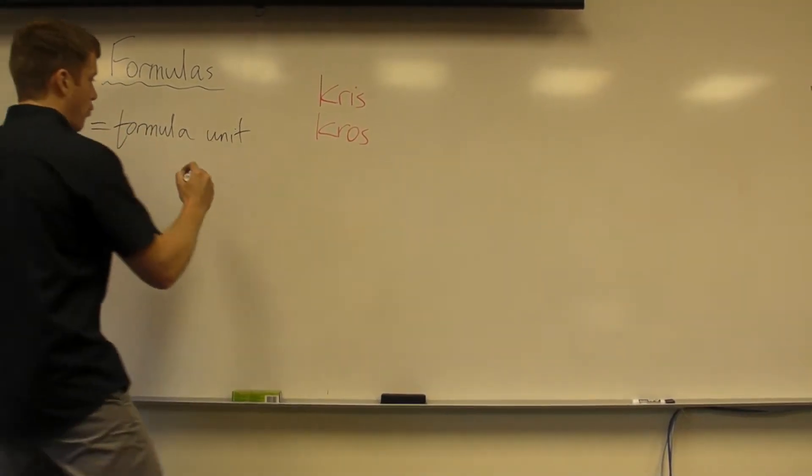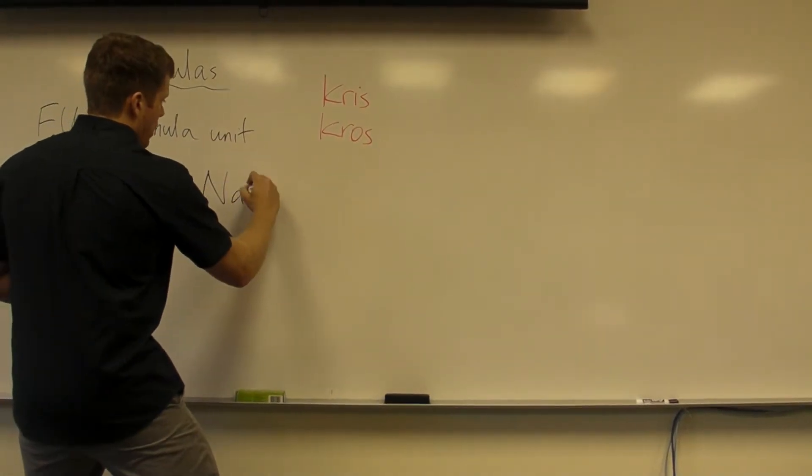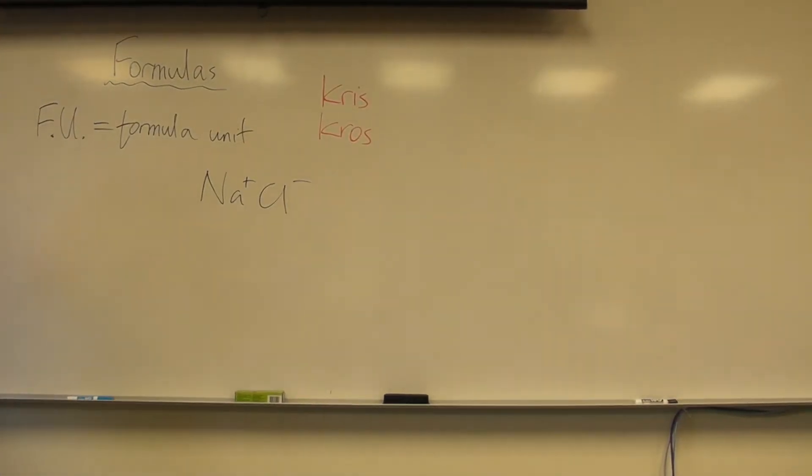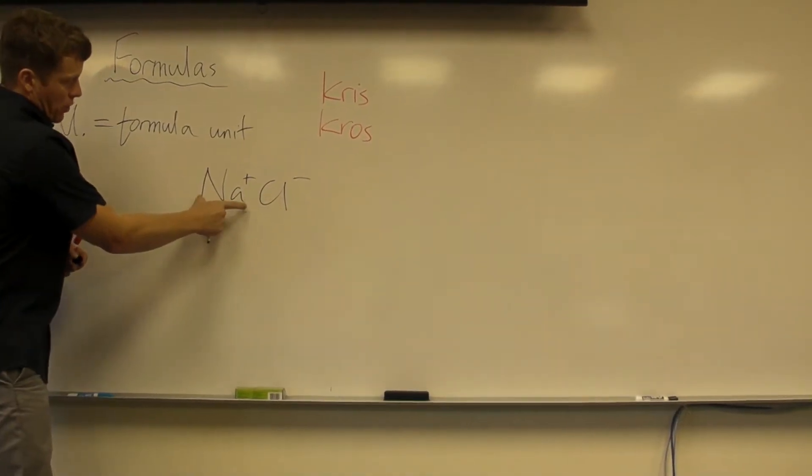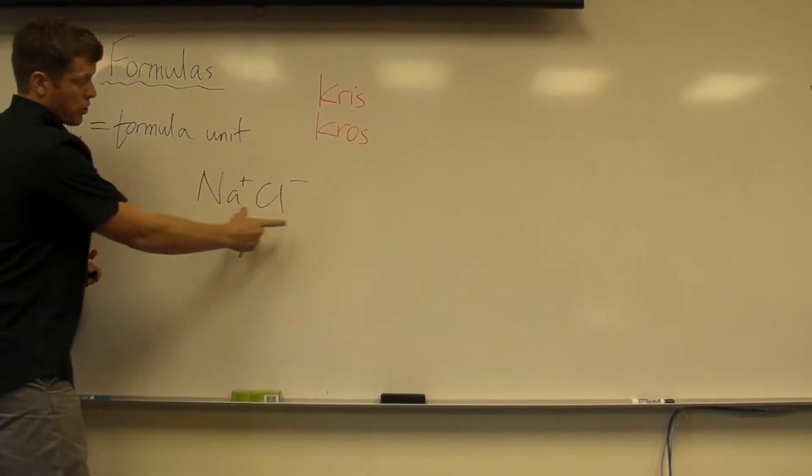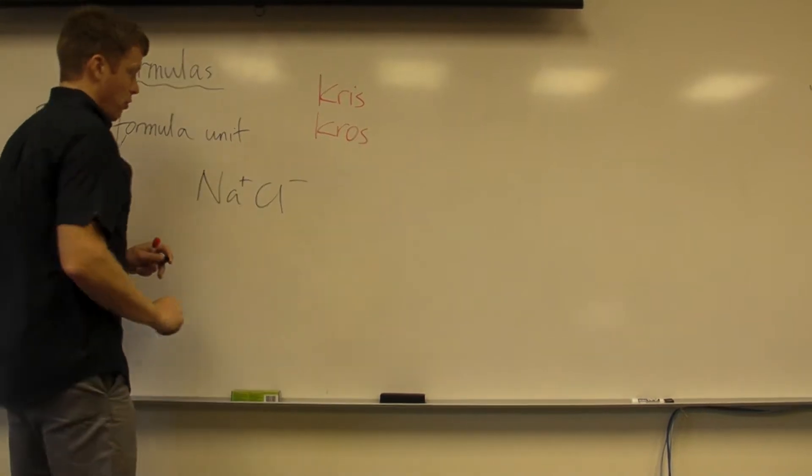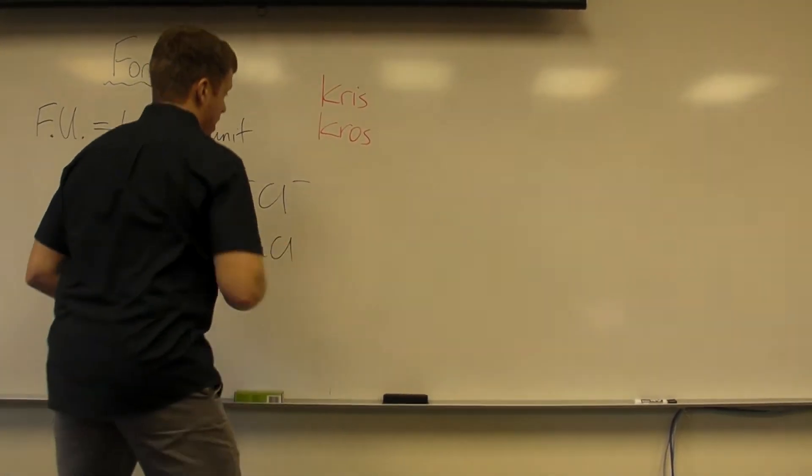So formula units and formulas. So when we write the formula for sodium chloride, you've got something that's got a positive one charge, something that's got a negative one charge, they cancel out to give you zero. That will give us a formula. So we just write it as NaCl.